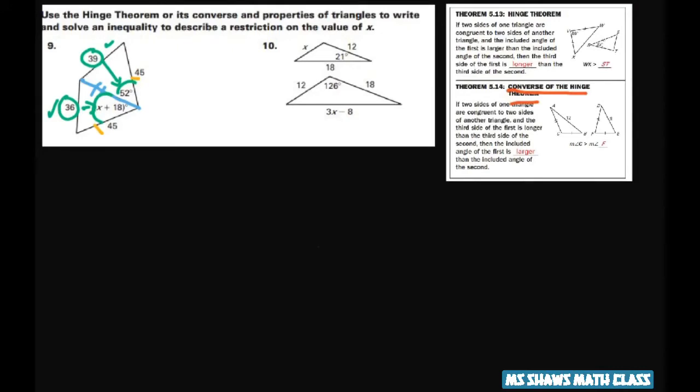So we're going to write that x plus 18 has to be smaller than 52. You subtract 18 from both sides, and you get x has to be smaller than 34 to make that work.